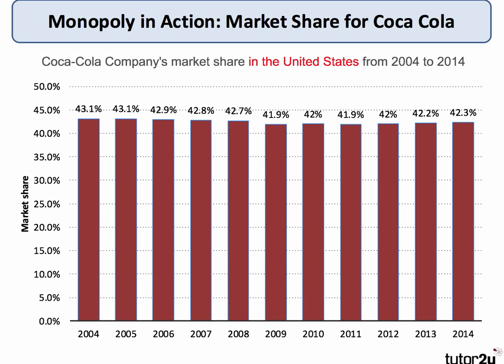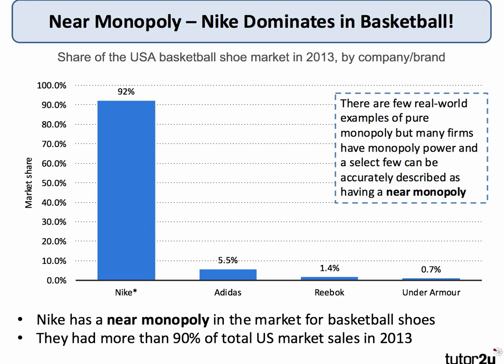Here's a diagram showing monopoly power for Coca-Cola — a remarkably constant market share over the last 10 years through to 2014. Coca-Cola has around a 40–45% market share in the United States, which is quite remarkable. Nike is another good example of a business which effectively has a near monopoly if we define the market as the market for basketball shoes. They have more than 90% of total market sales in 2013, with Adidas, Reebok, and the fast-growing Under Armour a long way behind.